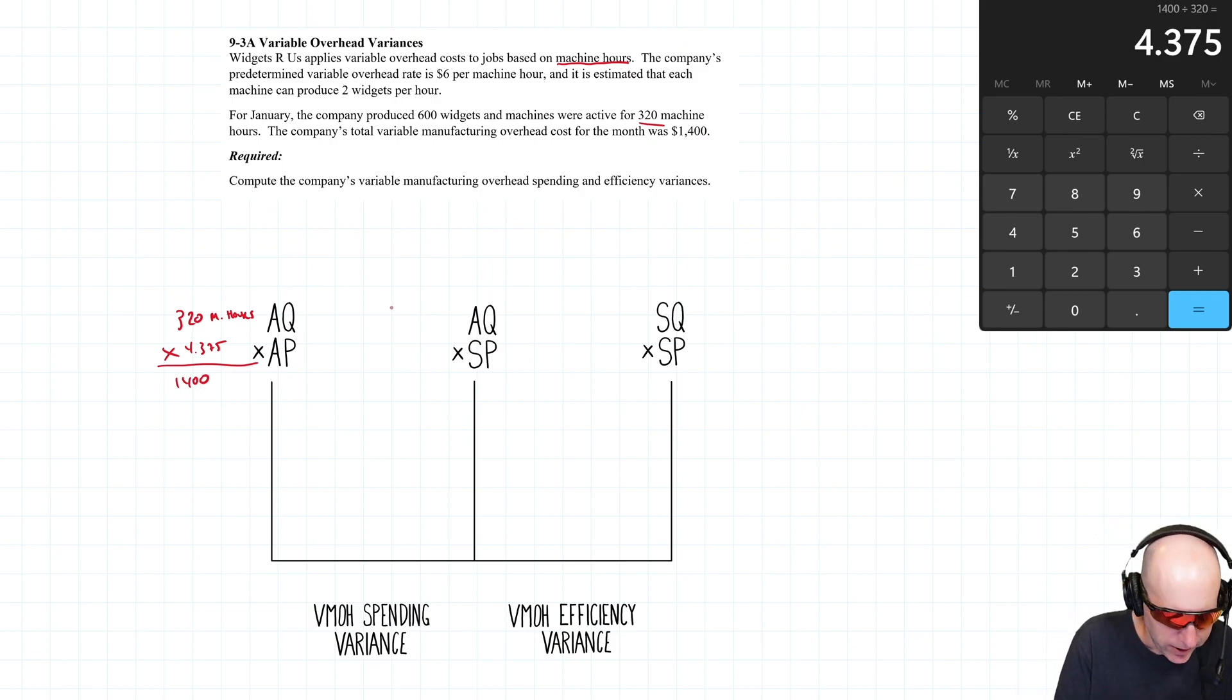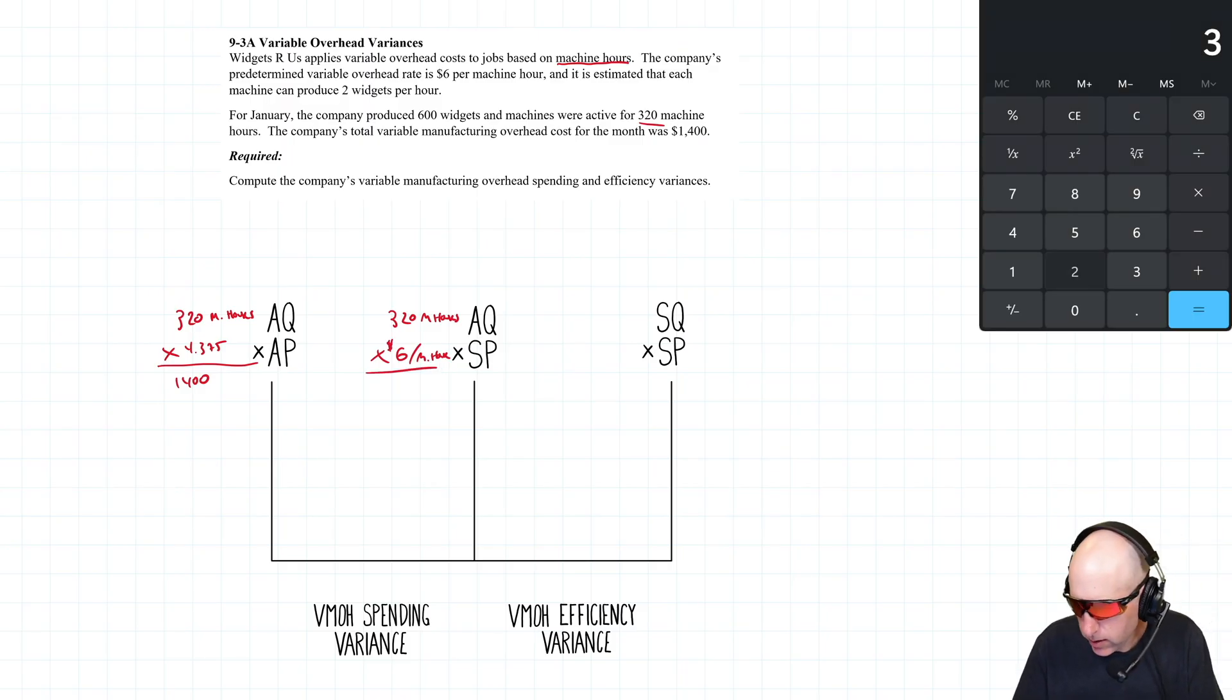AQ×SP – actual quantity of hours worked, 320 machine hours. Our standard rate is six dollars per machine hour, so it's going to be times six dollars per machine hour. 320 times six is 1,920.